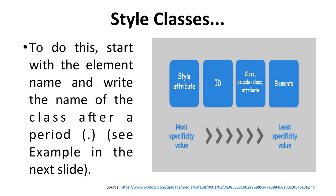To do this, start with the element name and write the name of the class after a period. The specificity order goes from most specific to least specific: style attribute, then pseudo-class attribute and element ID, then style attribute at element level — with style attribute being most specific and elements being least specific.